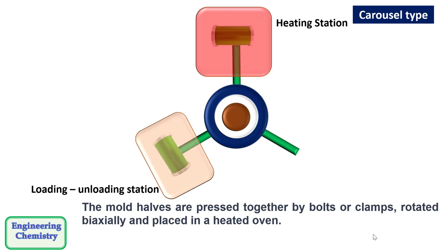The mold halves are pressed together by bolts or clamps, rotated biaxially and then placed in a heated oven. The ovens are usually fired with natural gas and equipped with blowers to distribute the heat throughout the chamber. Some ovens can be heated by oil or propane gas.